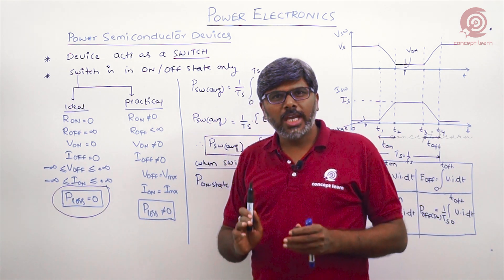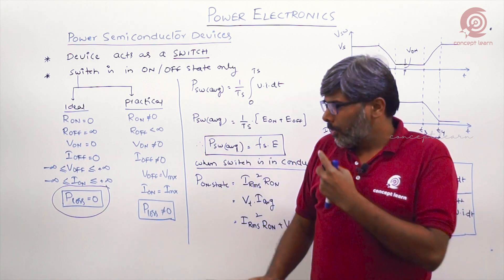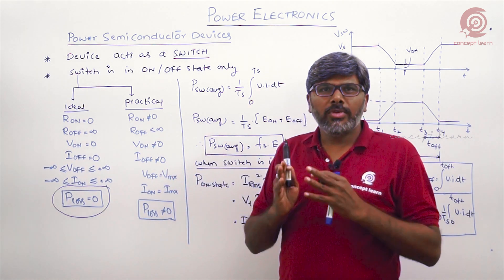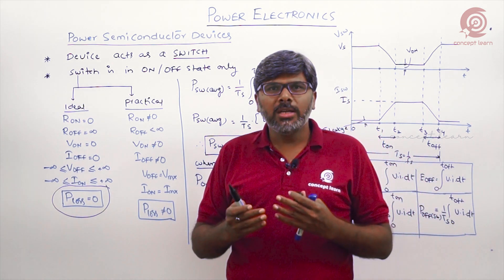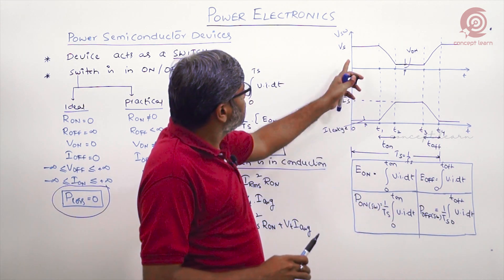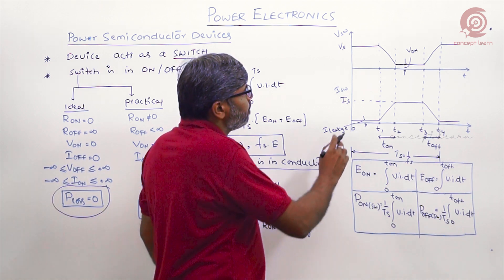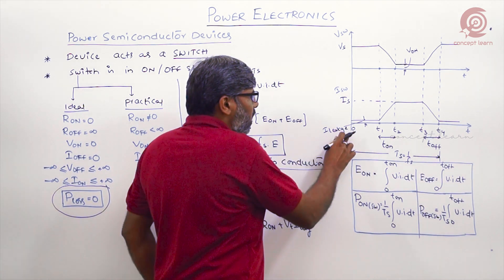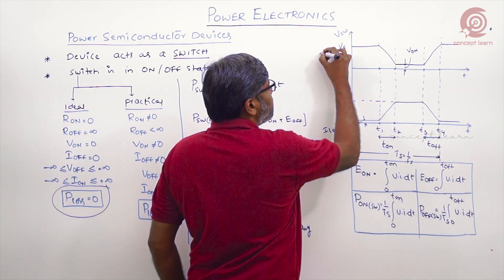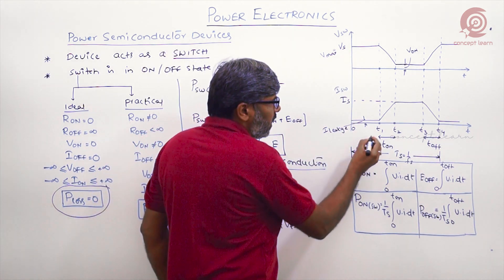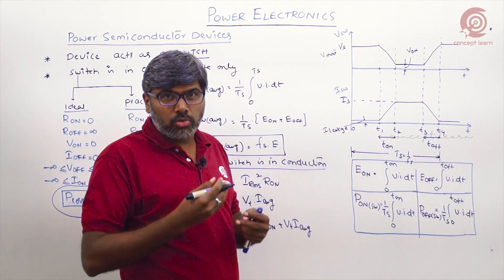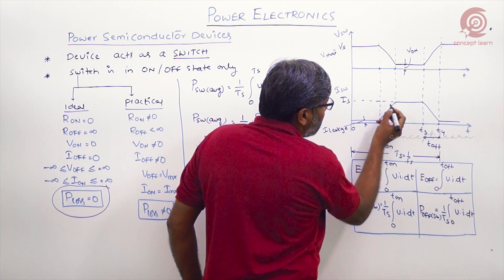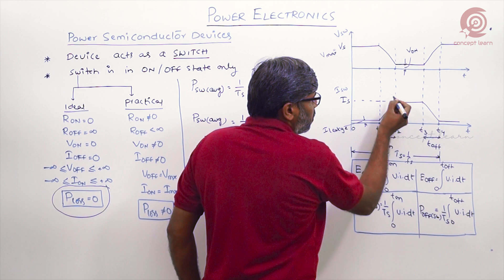Because of all these finite values, power loss in a practical switch is finite and non-zero. Analyzing practical switch characteristics is essential to determine power losses. Initially the switch is in the off state; during off state the current is not zero — that is called leakage current — and the voltage blocked by the switch is V_max as specified by the manufacturer. At time t1 a signal is given to the switch; it transitions to the on state gradually, not instantaneously, with current increasing at a rate di/dt.